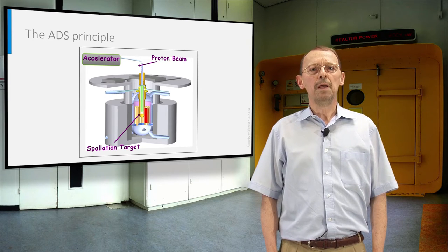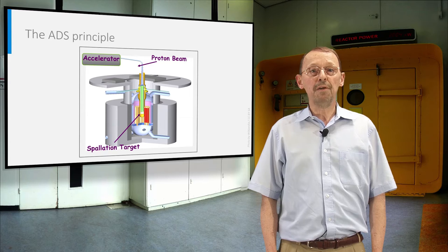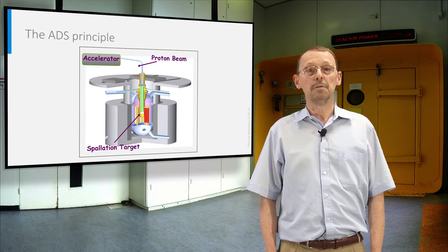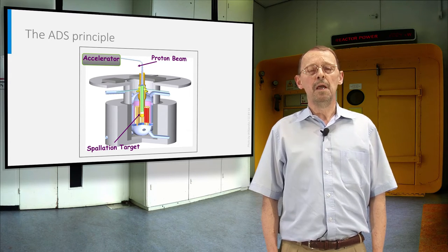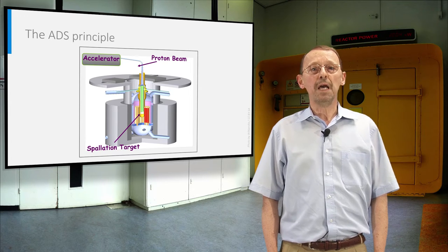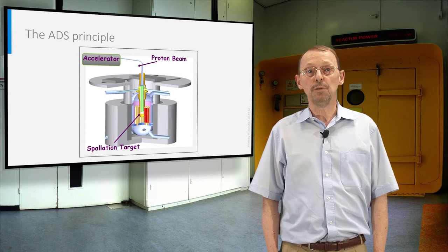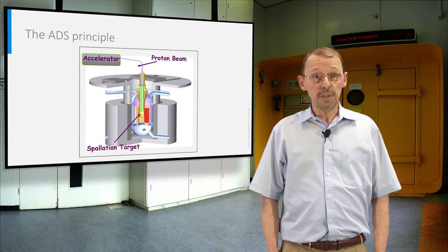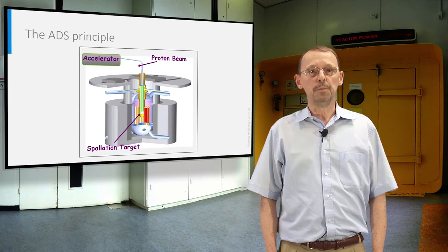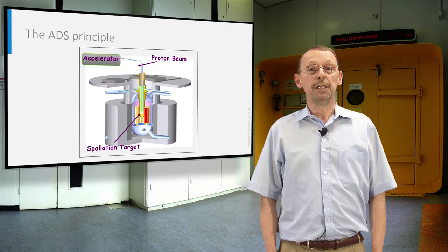In a previous video, you have learned about the effective multiplication factor, also called Kf. In a classical reactor, we have a Kf somewhat larger than 1. Safety and control rods are available to keep the fission chain stable.